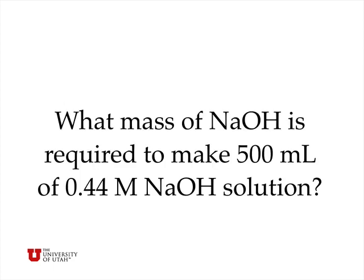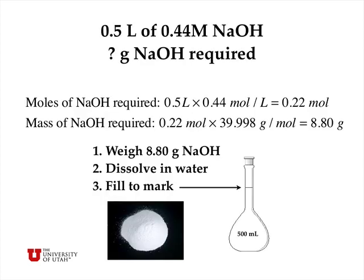What mass of sodium hydroxide is required to make 500 milliliters of 0.44 molar NaOH solution? The number of moles required is 0.5 liters times 0.44 moles per liter, which is 0.22 moles. The mass is 0.22 moles times the molar mass of sodium hydroxide, which is 8.8 grams.